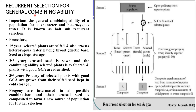Recurrent selection for general combining ability: this method improves the general combining ability of the population for a character using a heterozygous tester. It is also known as half-sib recurrent selection. In the first year, the selected plants are crossed with a heterozygous tester having a broad genetic base. Seeds are kept in cold storage.